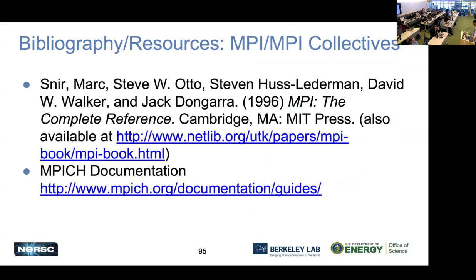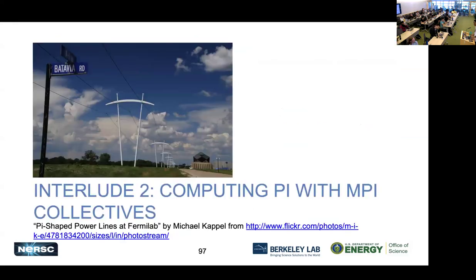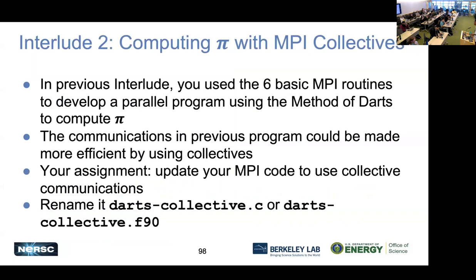We are about to break for lunch, but one thing to consider — and we'll revisit during our interactive session this afternoon — is that you've done one implementation of computing PI using sends and receives. Now, how would you implement that using collective functions? We'll go over this in detail in the afternoon interactive section, but this will be your next interlude related to MPI with collectives: how can you use MPI collective routines to do the same computation of DARTs?